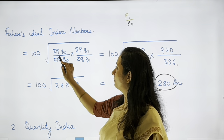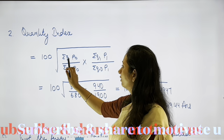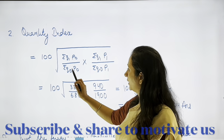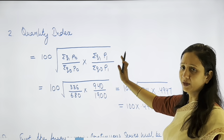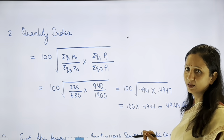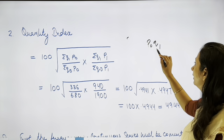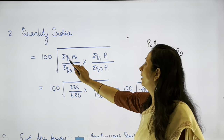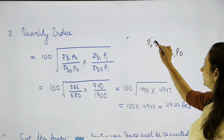For the Quantity Index Number, instead of price as the base, quantity is the base. Current year quantity divided by base year quantity, multiplied once by base year price and once by current year price. The formula becomes √[(ΣQ1P0/ΣQ0P0) × (ΣQ1P1/ΣQ0P1)]. Substituting the same figures gives Quantity Index = 49.44.